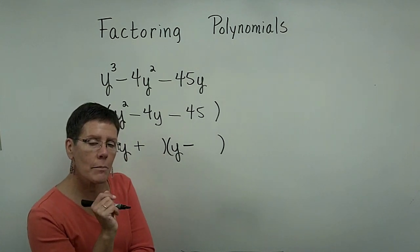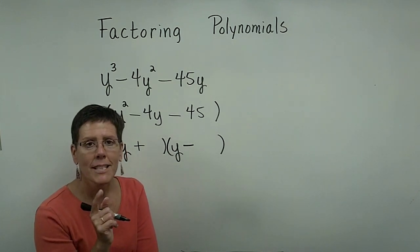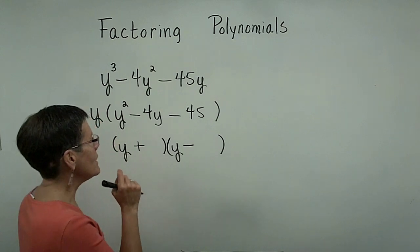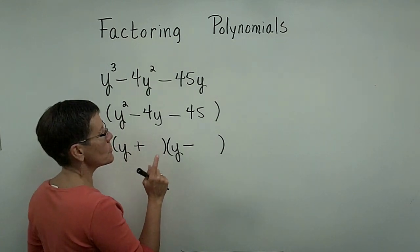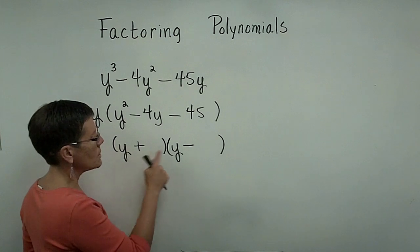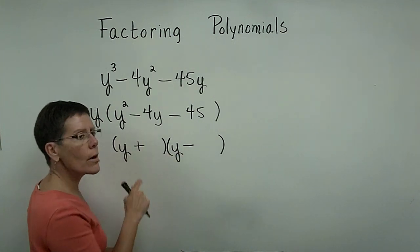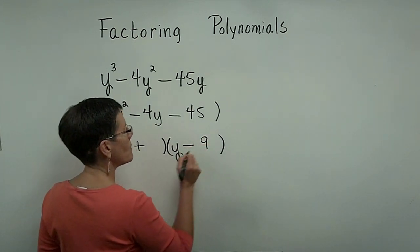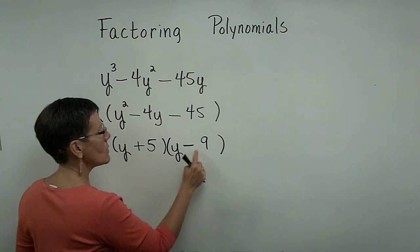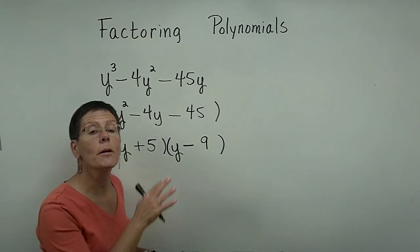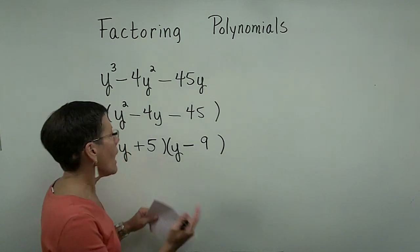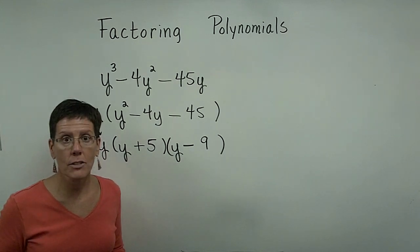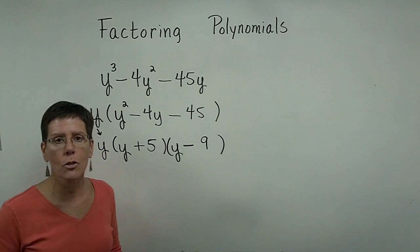The first factor pair that comes to mind for 45 is 5 times 9 — yes, there's also 1×45 and 3×15. With opposite signs, 5 and 9 need to add to negative 4. Since they'll subtract, make the 9 negative and the 5 positive, giving -9 + 5 = -4. You can FOIL to verify. And remember: whatever GCF you factored out first must be brought down and written in your final answer — so the answer is y(y + 5)(y - 9).